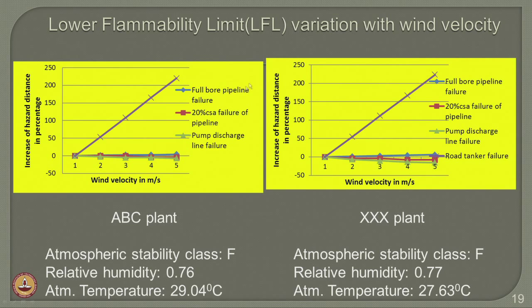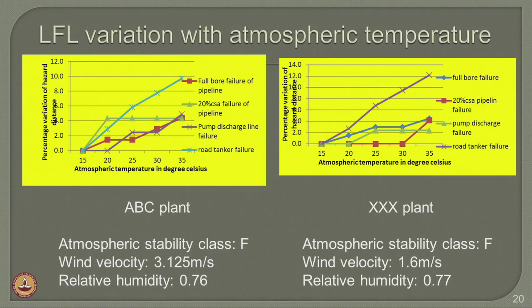The next factor considered is atmospheric temperature. Stability class F is maintained, with wind velocities of 3.125 and 1.6 m/s as local specifications for the given plants, and similar relative humidity values. The atmospheric temperature varies from 15 to 35 degrees Celsius, which significantly influences the hazard distance depending on the type of failure considered. However, at low temperatures the variation is not significant; for higher temperatures, rope tanker failure results in significant influence. For 20 percent cross-section area failure, the hazard distance more or less becomes constant after a specific temperature — meaning the atmosphere temperature influence beyond approximately 20 degrees Celsius is negligible for that failure type.